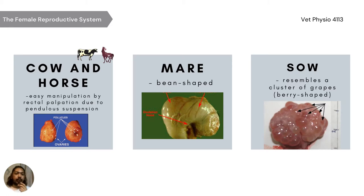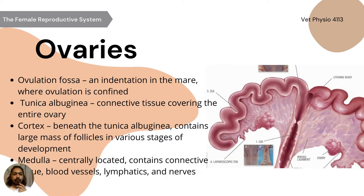In cow and horse, there is easy manipulation by rectal palpation due to the pendulous suspension. In the mare, the ovary is pin-shaped, and in the sow, it is just a cluster of grapes or berry-shaped. The ovaries have an ovulation fossa, an indentation in the mare where ovulation is confined.